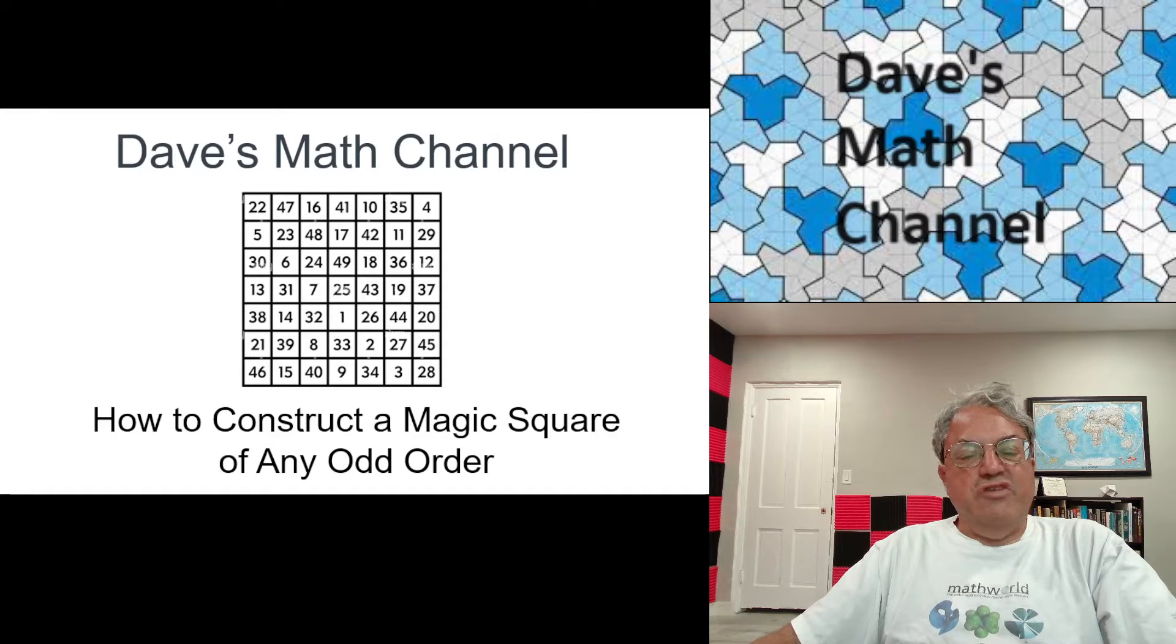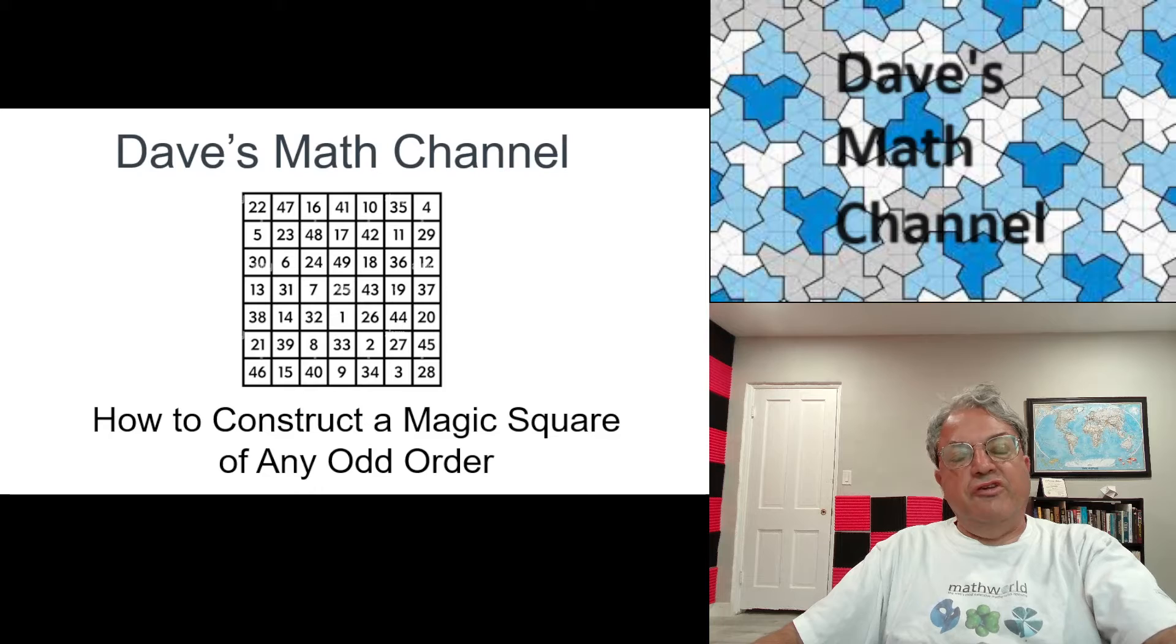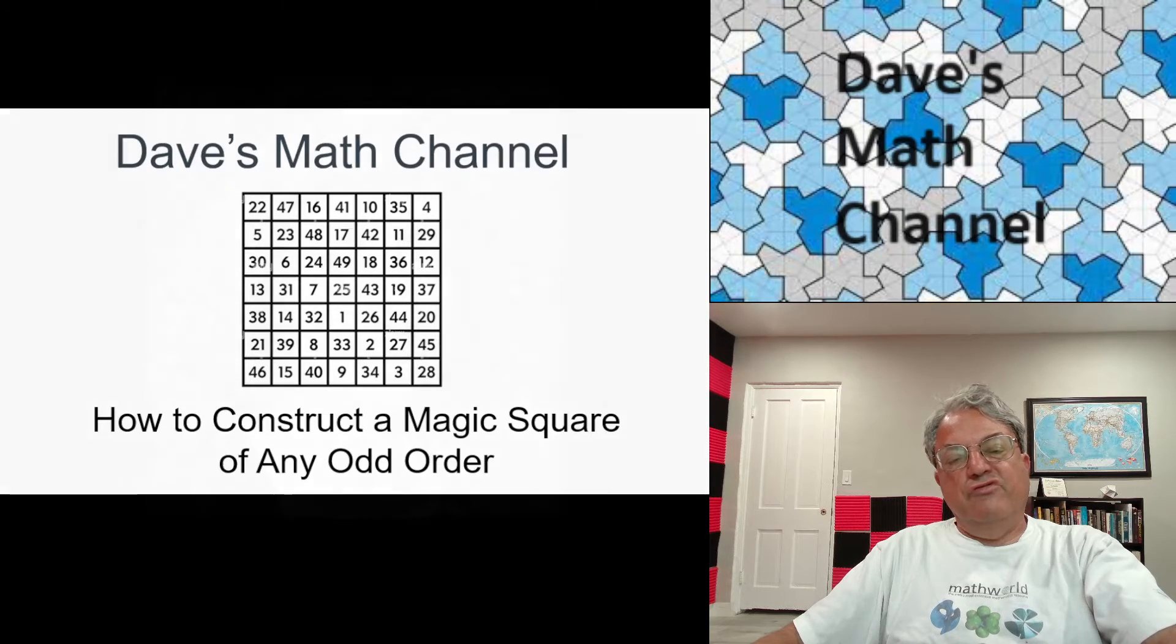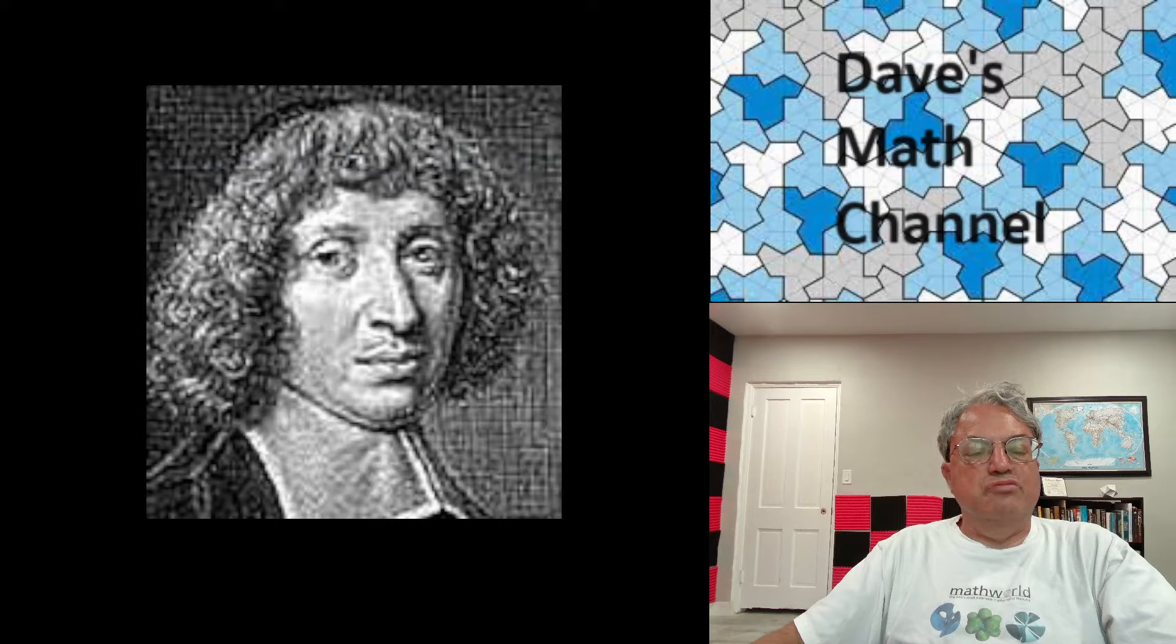But you can use this method to construct the Lo Shu square or order five, order seven, any order you want. It's a pretty remarkable method, I think, and it's a pretty simple method. And it goes by the name of the Siamese method, also known as the De la Loubère method.